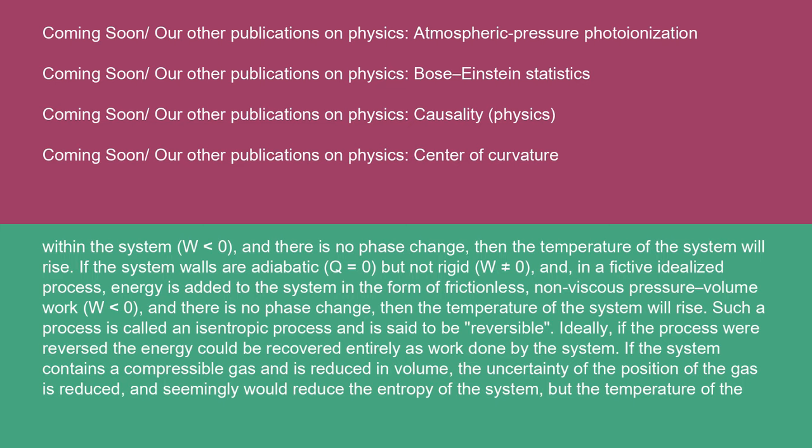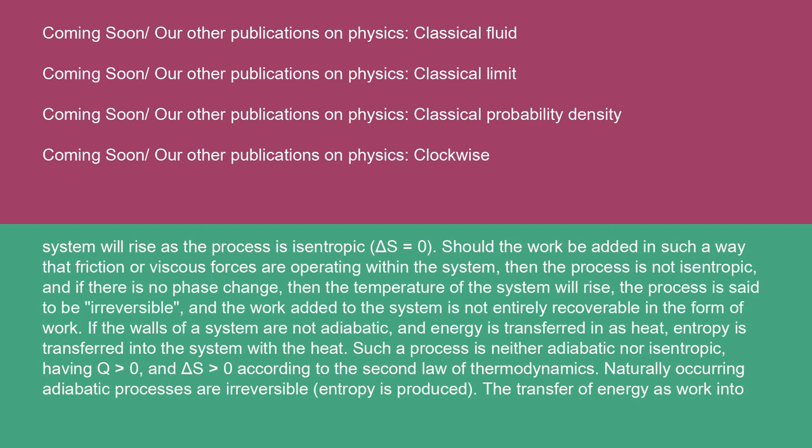Ideally, if the process were reversed, the energy could be recovered entirely as work done by the system. If the system contains a compressible gas and is reduced in volume, the uncertainty of the position of the gas is reduced and seemingly would reduce the entropy of the system, but the temperature of the system will rise as the process is isentropic (ΔS = 0). Should the work be added in such a way that friction or viscous forces are operating within the system, then the process is not isentropic, and if there is no phase change, then the temperature of the system will rise, the process is said to be irreversible, and the work added to the system is not entirely recoverable in the form of work.